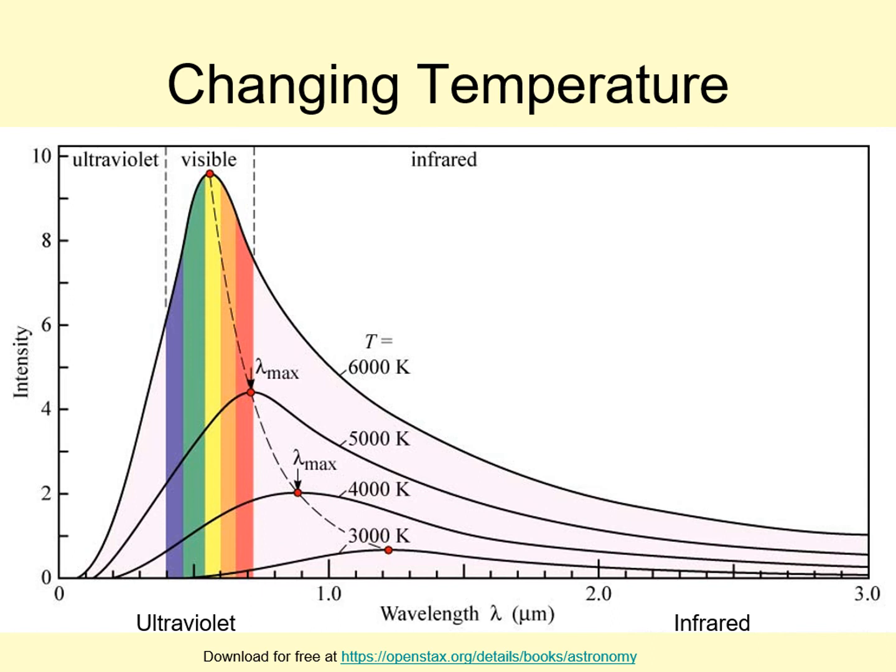Look at where the blue line crosses the visible spectrum. This time, the curve is higher on the blue end than the red, so more blue light is emitted than red light. To our eyes, this looks like a blue-white glow.